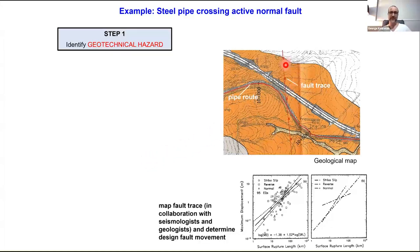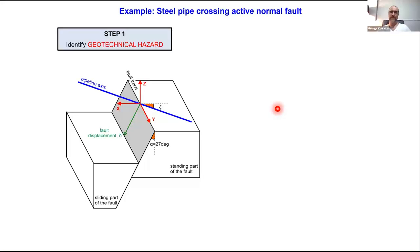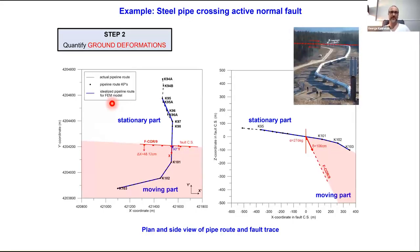Let's see very briefly how this workflow goes for the stress analysis of a steel high-pressure gas pipe crossing an active fault, such as the Corinthos-Megara pipe or the Trans-Alaska pipe crossing the Denali fault. The first step is to map the fault trace relative to the pipe route in collaboration with seismologists and geologists, and determine the design fault movement depending on the type of fault — strike-slip, normal, or reverse — and its length. We then project the geometry of the fault onto the pipe route to determine the design actions, which are the ground deformations. The problem is three-dimensional.